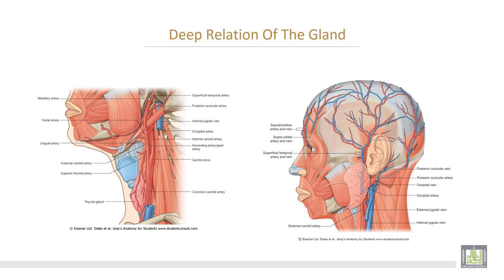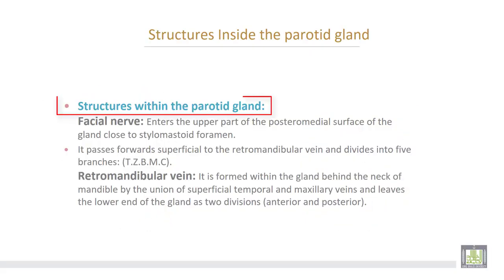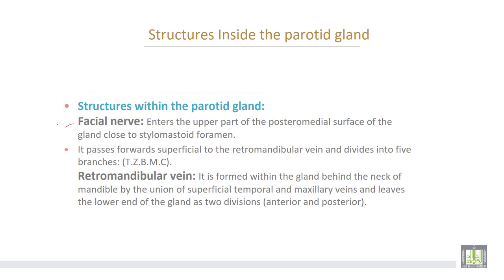On the deep surface of the parotid gland, the medial surface relates to the ramus of the mandible and its attached muscles. The posteromedial surface relates to the mastoid process with the digastric and sternomastoid muscles attached. The structures lying inside the parotid gland: number one, the facial nerve enters the upper part of the posteromedial surface of the gland close to the stylomastoid foramen. It passes forward superficial to the retromandibular vein and divides into five terminal branches.